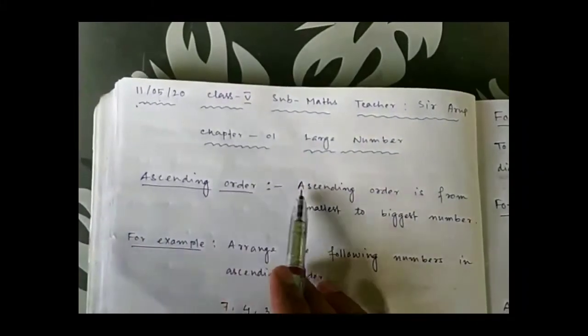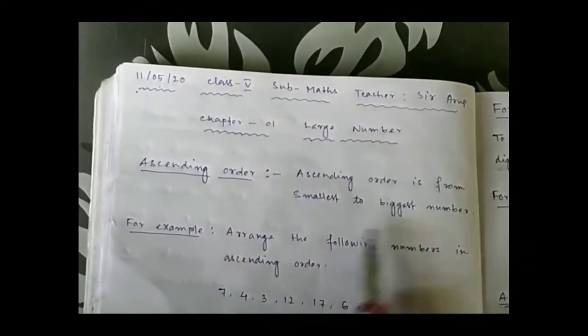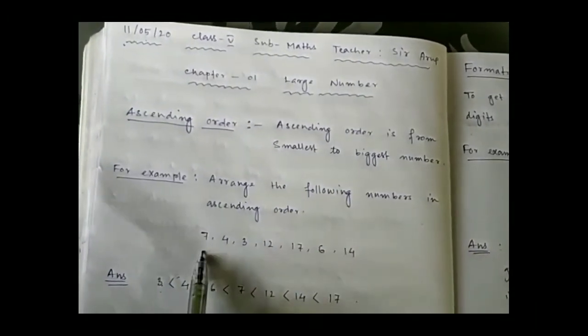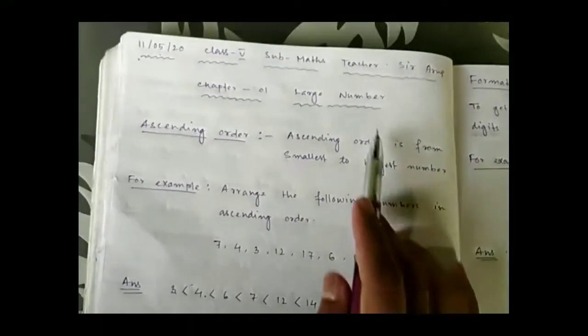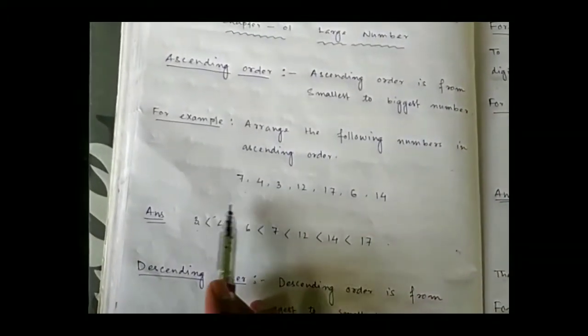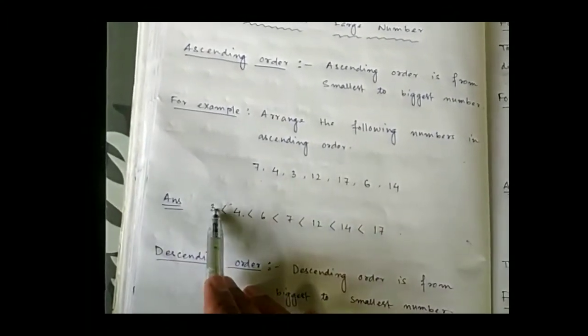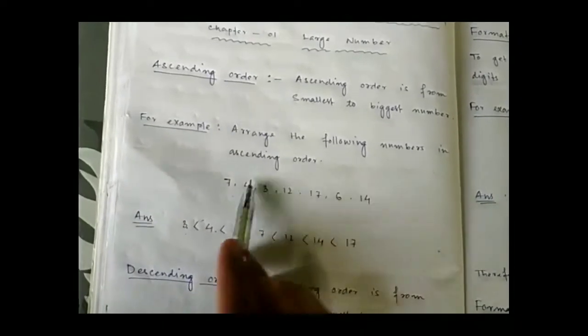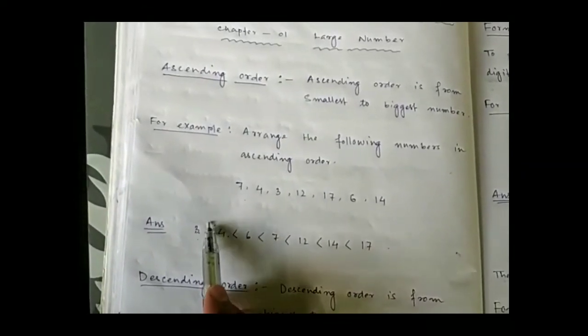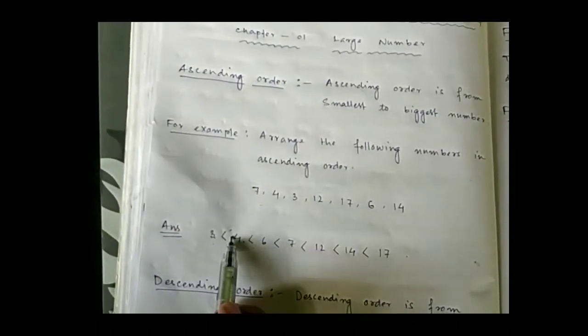Today we learn about ascending order. Ascending order is from smallest to biggest number. For example, to arrange given numbers in ascending order, we write the smallest number first. So the smallest number is 3, then 4, then 6, then 7, then 12, then 14, then 17. We arrange all numbers from smallest to biggest and put the less-than sign between every two digits.